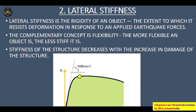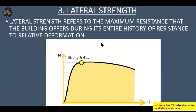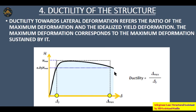The stiffness of a structure decreases with the increase in damage. As delta — the deformation — increases, the stiffness decreases. The third concept is lateral strength, which refers to the maximum resistance that the building offers during its entire history of resistance to relative deformation. Similar to lateral stiffness, with the increase in deformation the lateral strength also decreases.